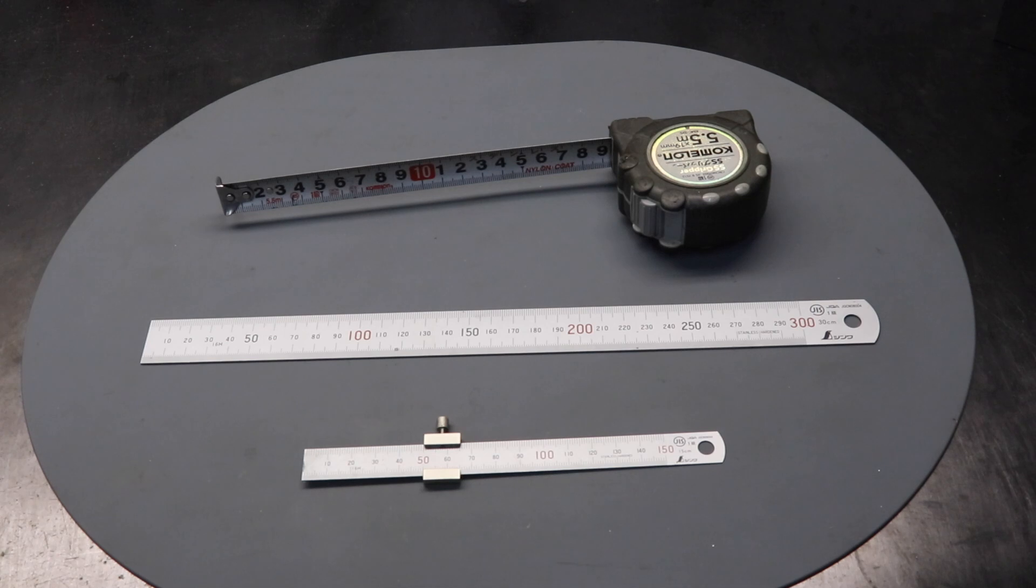This video is going to focus on equipment used for dimensional measurements, for example length, depth, diameter and thickness, commonly used for motorcycle maintenance.